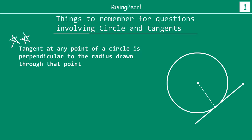Very briefly, we have drawn a circle with center O, and P is an external point and PA is a tangent. Because PA is a tangent it touches the circle at one point, say A. If you join the radius OA, then this angle is 90 degrees. At the point of tangency, if you draw a radius, the angle between the radius and tangent is 90 degrees.